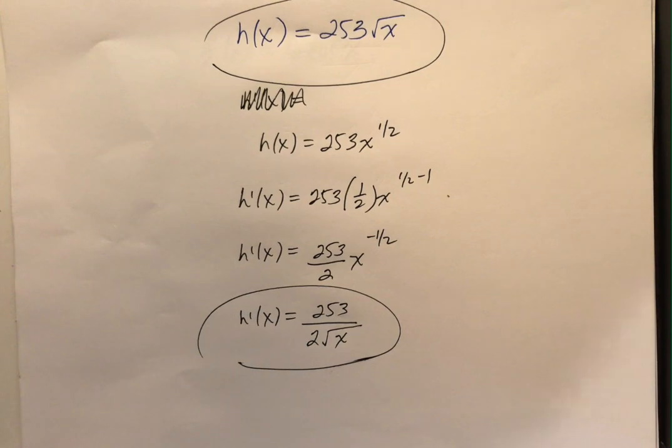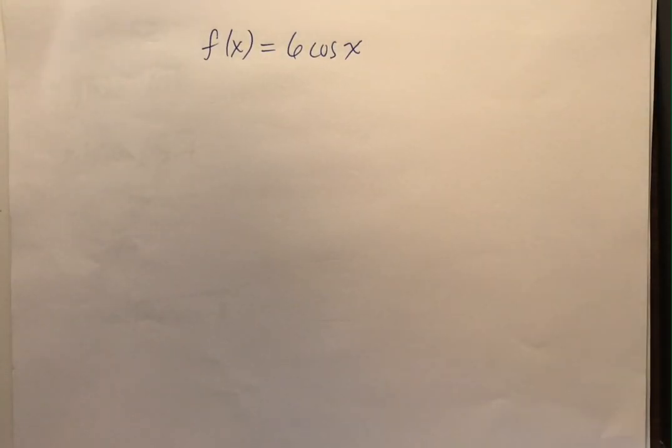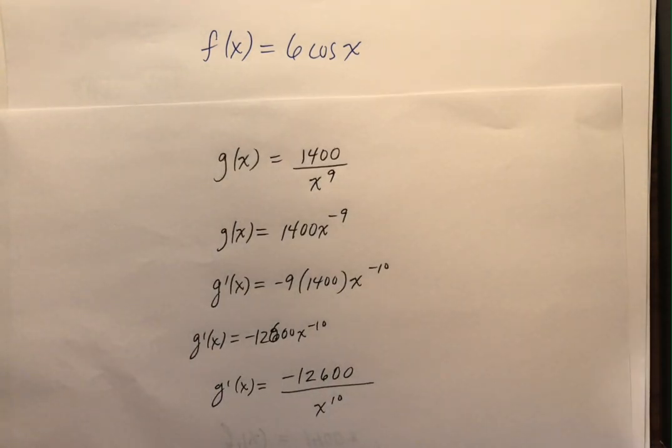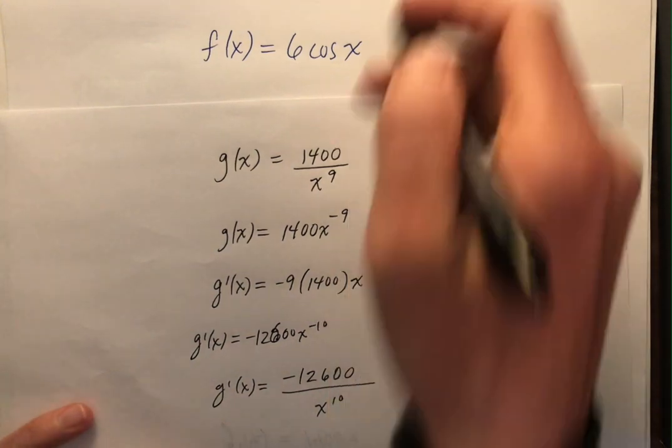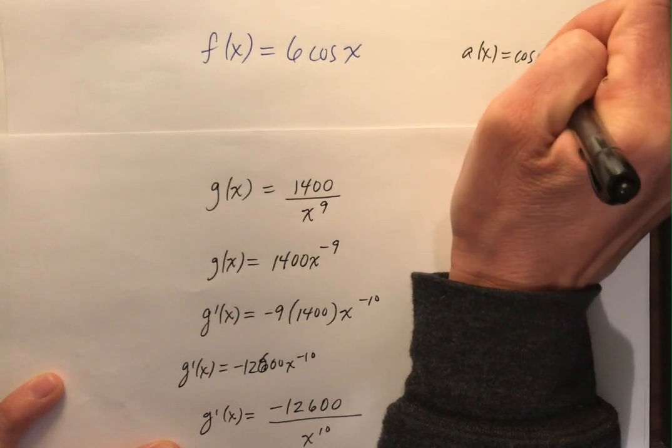And if I clean up and have no negative exponents, 253, the x is going to join the square root of x is going to join that two in the denominator. Given that h of x is 253 square root of x, the derivative is 253 over 2 times the square root of x. I know, it's really some fascinating stuff. So let's keep going. All right, f of x is 6 cosine of x. Now here, I want to bring in that idea again. No big deal. When we have a coefficient, we're just going to take the derivative of the function.